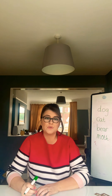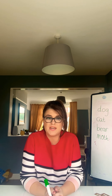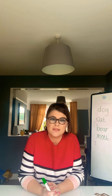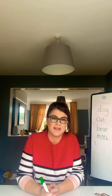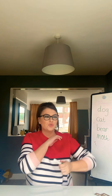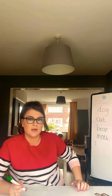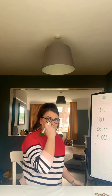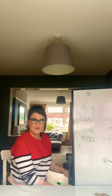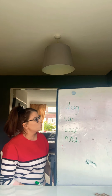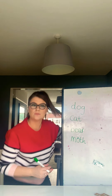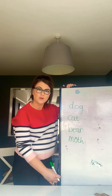Hello everybody, you should have all watched the video of Oi Dog on YouTube. I sent a link to it on Tapestry, so if you haven't watched that yet, just go back and watch it and then come back to my video. You'll notice in the story there were lots and lots of animals, so I've written a list of just some of the animals that were in the story. Let's read them, shall we?